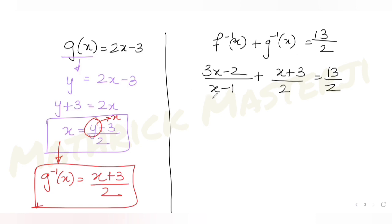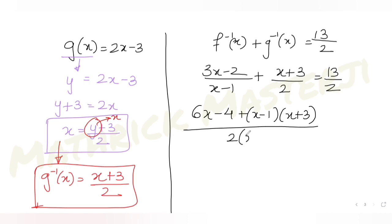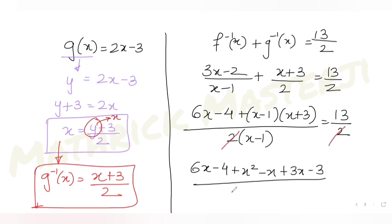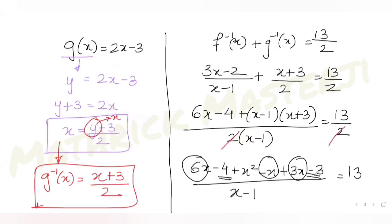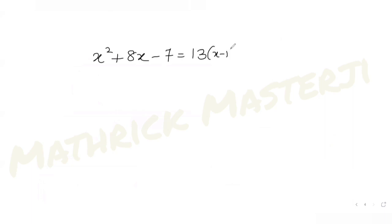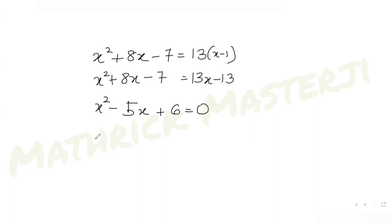Combining over a common denominator of 2(x minus 1): (6x minus 4) plus (x minus 1)(x plus 3), all divided by 2(x minus 1), equals 13 over 2. The 2s cancel, leaving 6x plus (x squared plus 2x minus 3) minus 3, which simplifies to x squared plus 8x minus 7 over (x minus 1), equals 13.